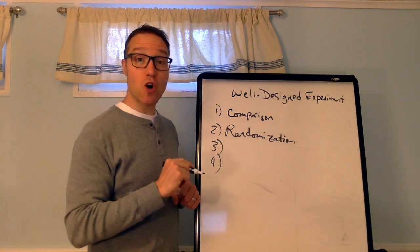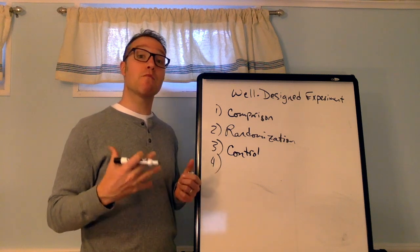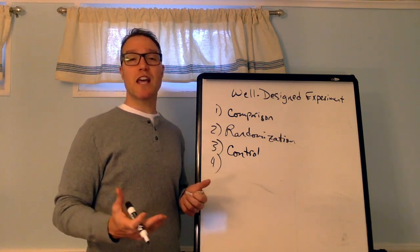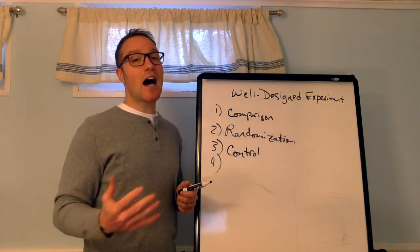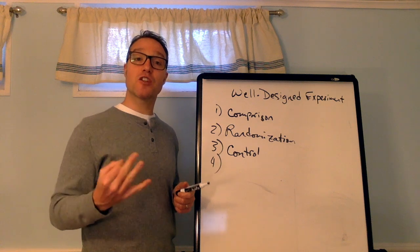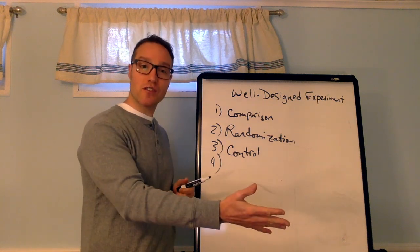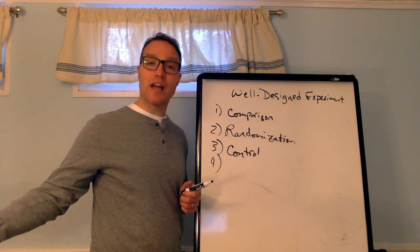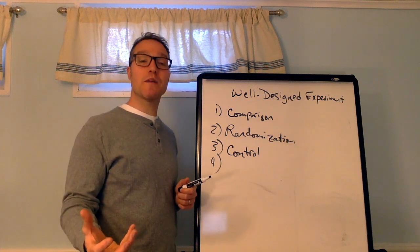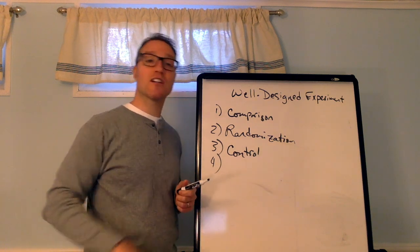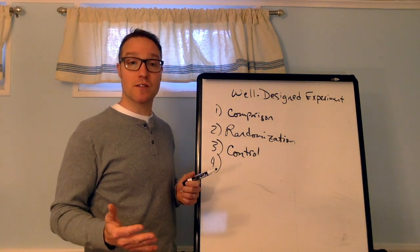The third principle is control. Control means keeping other variables that might affect the response variable the same for all groups. So for example, if I'm comparing two laundry detergents and I have 50 shirts, I want to make sure that the 50 shirts are identical. I don't want to use cotton shirts with detergent A and then a polyester blend shirt with detergent B because that material would be a confounding variable. I want to use 50 identical shirts and randomly assign them to the two different treatments, which are detergents.